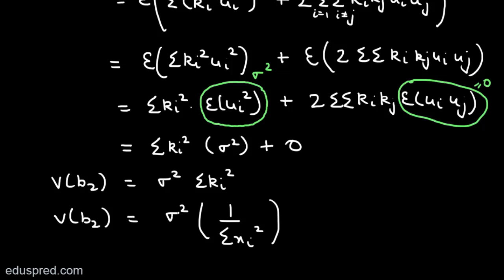You can also note the features of this formula: Var(B2) is positively related with sigma² and negatively related with summation(xi²). However, since this is a mathematical course, I'm not going to explain the intuition behind these linkages.